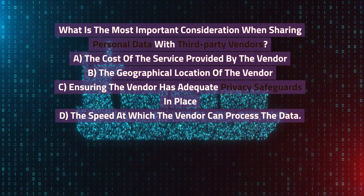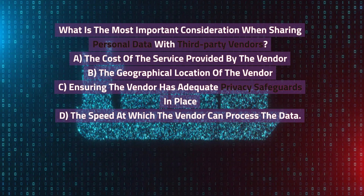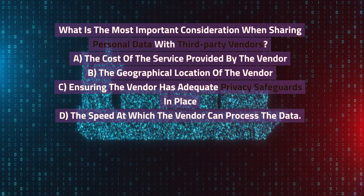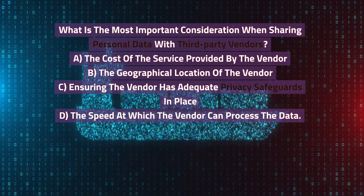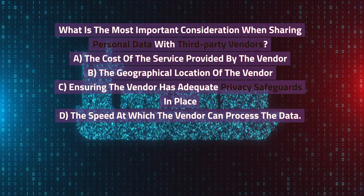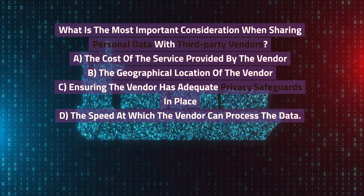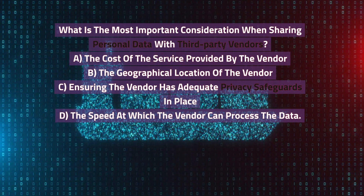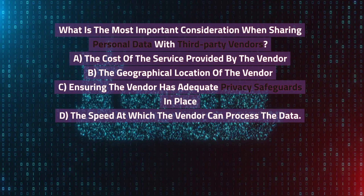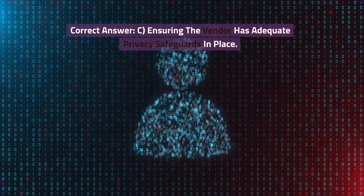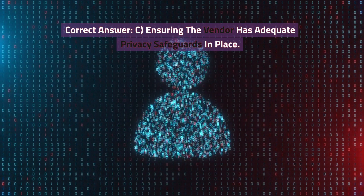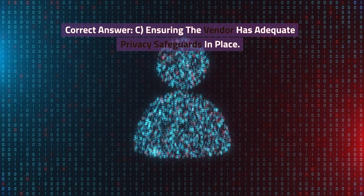What is the most important consideration when sharing personal data with third-party vendors? A. The cost of the service provided by the vendor. B. The geographical location of the vendor. C. Ensuring the vendor has adequate privacy safeguards in place. D. The speed at which the vendor can process the data. Correct answer: C. Ensuring the vendor has adequate privacy safeguards in place.